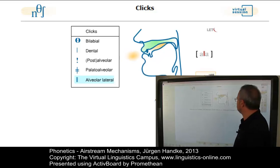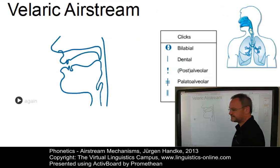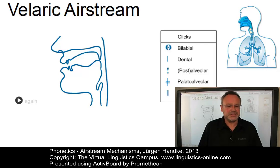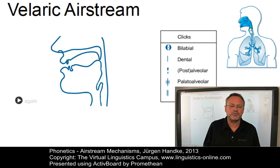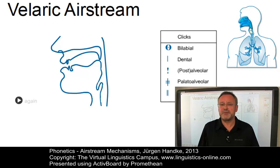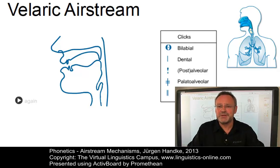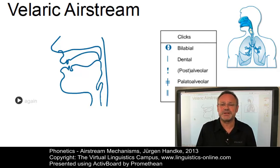You can find these in the unit Airstream Mechanisms on the Virtual Linguistics Campus. Clicks are used in many South African languages, for example those belonging to the Khoisan group. Clicks are all voiceless because the glottis is not involved in their production. Additional voicing, however, is possible — for example, we can hum during the production of a click. The click itself, however, remains voiceless. This would be some result of humming as a sort of secondary articulation accompanying clicks.